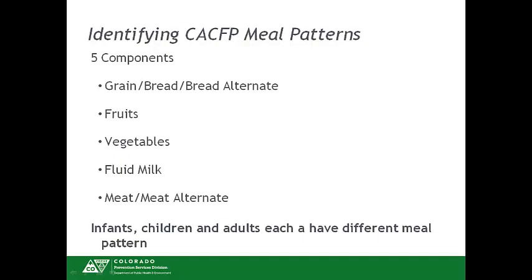The CACFP meal pattern includes five food groups, also referred to as meal components, that must be served in various combinations in order to receive reimbursement for meals and snacks. The five components are grain/bread-bread alternate, fruits, vegetables, fluid milk, and meat-meat alternate. At snack, the fruit and vegetable component is combined and considered one component.